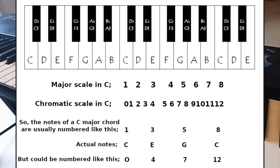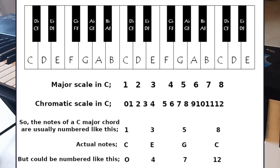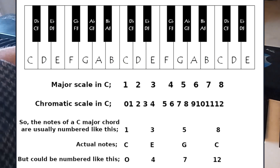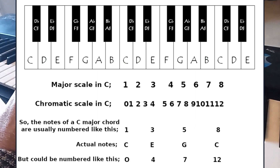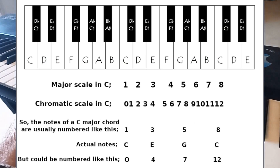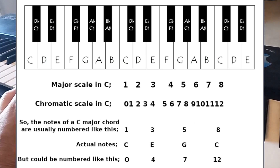If we use duodecimal counting instead and start on 0, it becomes: 0, 1, 2, 3, 4, 5, 6, 7, 8, 9, dek, el — and then you start again at 10 (do), which is the dozen, or the octave.